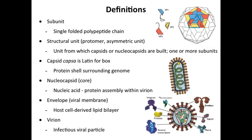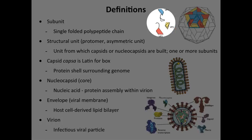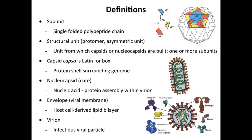Some definitions, because I'll use all these terms a lot. A subunit — when we talk about building a virus particle or a virion, we talk about subunits. These are single polypeptides. VP1, VP2, VP3 — VP is often used to describe these; they're virion proteins. These are subunits because they fold up to make a structural unit. A structural unit is the unit from which capsids or nucleocapsids are built.